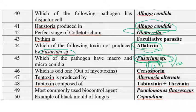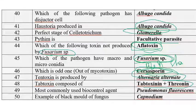Among the given options, which is the odd one out of mycotoxins? That is cyclosporin — it is not a mycotoxin but a different type of toxin. The remaining are all mycotoxins. The toxin produced by Alternaria alternata is AAL toxin. Tab toxin is otherwise called wildfire toxin, which is produced by Pseudomonas syringae pv. tabaci.